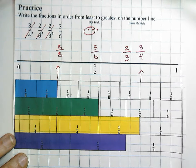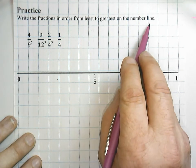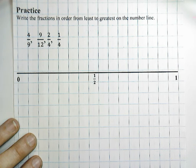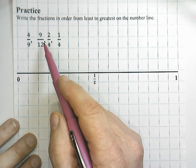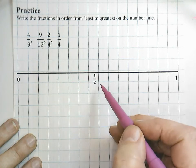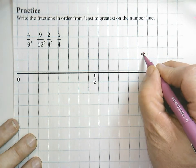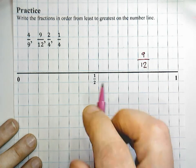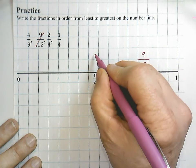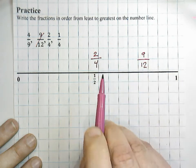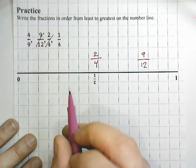Let's try one more, this time without the models. Write the fractions in order from least to greatest on the number line. Four-ninths — I'm not sure about that one, I'll come back to it. Nine-twelfths: I know that six-twelfths is equivalent to one-half, and nine-twelfths would be greater, so I'll place nine-twelfths over here. Two-fourths is a fraction equivalent to one-half, so that was an easy one. One-fourth is less than two-fourths, so I know that's going to be over here.